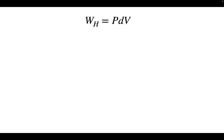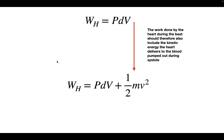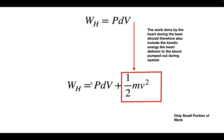To find the total work done by the heart, we use the pressure-volume work equation and also include the kinetic energy the heart delivers to the blood pumped out during systole. Since the blood is moving at a specific velocity, it has kinetic energy, meaning energy was imparted by the heart to allow that movement. It's important to note that kinetic energy is only a small portion of the heart's total work — the majority is pressure-volume work.